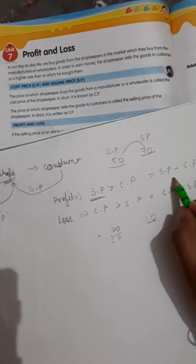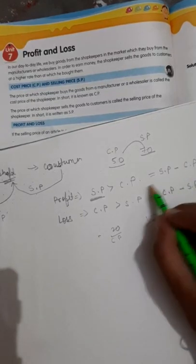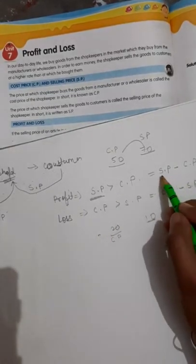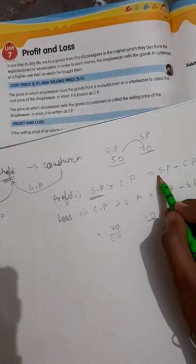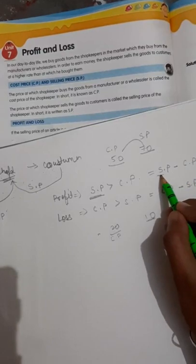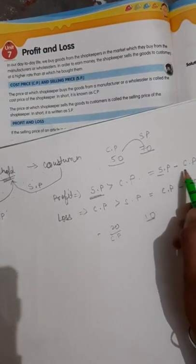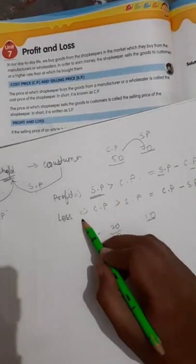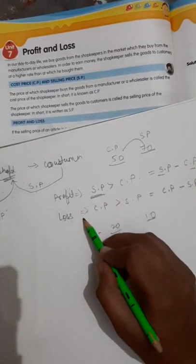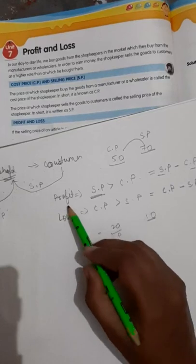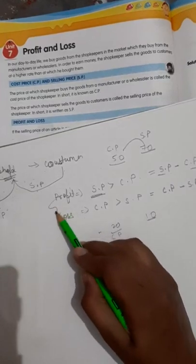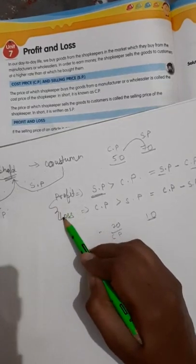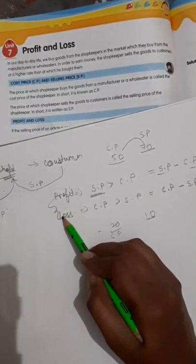Subtract CP from SP and you will get profit. And CP minus SP gives the loss. Using these two formulas, we make a total of six formulas, which are also mentioned in the book.